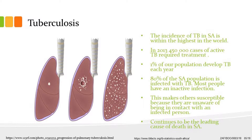Tuberculosis. The incidence of tuberculosis in South Africa is amongst the highest in the world. In 2013, 450,000 cases of active TB required treatment. 1% of our population develops tuberculosis each year.